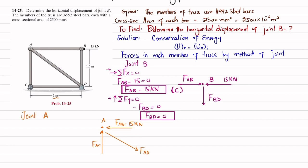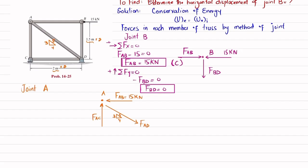The length of the truss is 2 meters horizontally and 1.5 meters vertically. Multiplying by 2 gives a 3-4-5 right triangle, so the member AD has components: horizontal = FAD × 4/5 and vertical = FAD × 3/5. Applying equilibrium in the x-direction (rightward positive): −15 + FAD × 4/5 = 0.